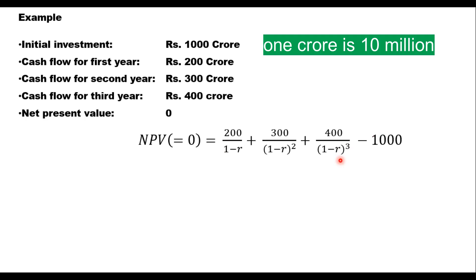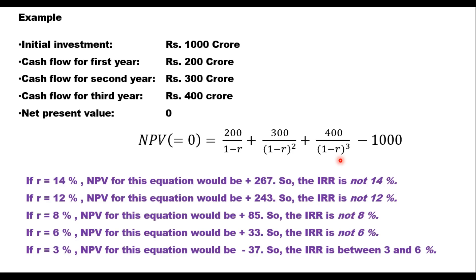This is to be done by trial and error. And sometimes it becomes very difficult also if you have more number of years. In this example, if you take let us say R is equal to 14%, then NPV from this equation would be plus 267. Therefore IRR is not 14%. If you take 12%, it will be plus 243. So IRR is not 12% also. If you take R is equal to 8, R is equal to 6, R is equal to 3, NPV will be minus 37 here.